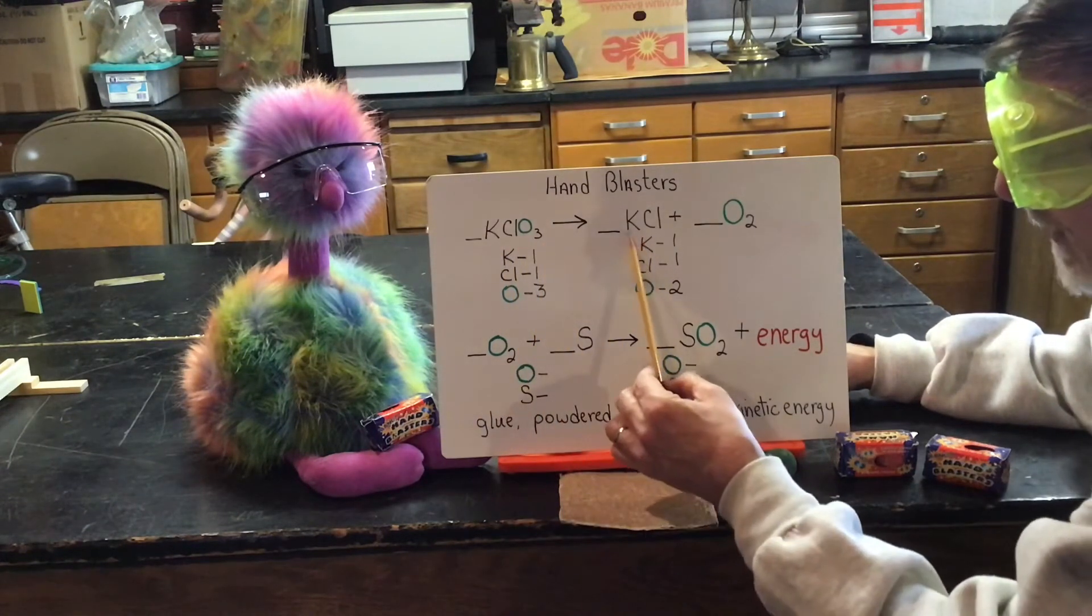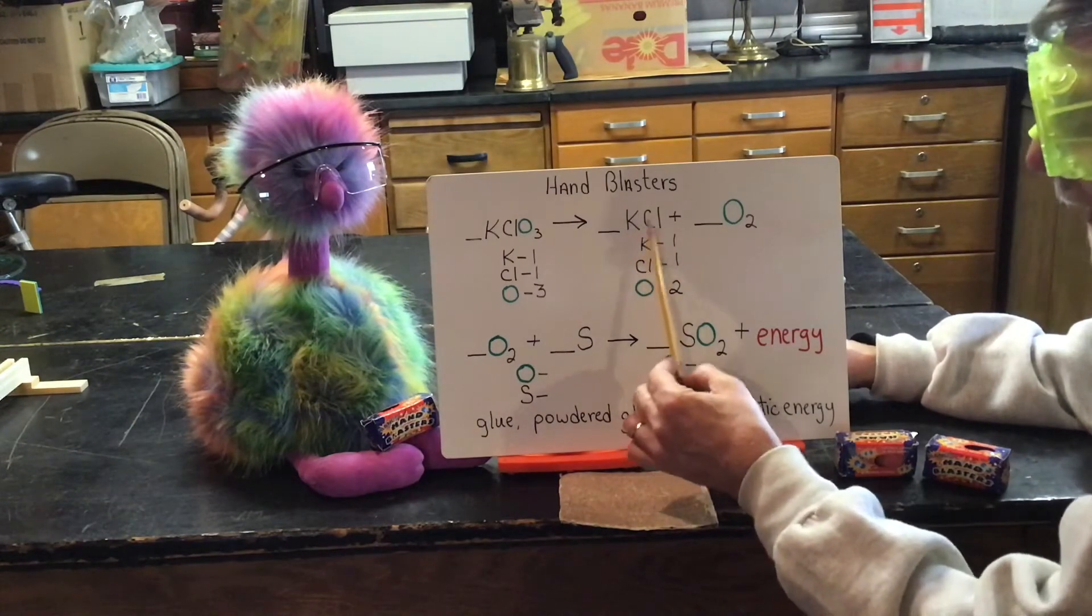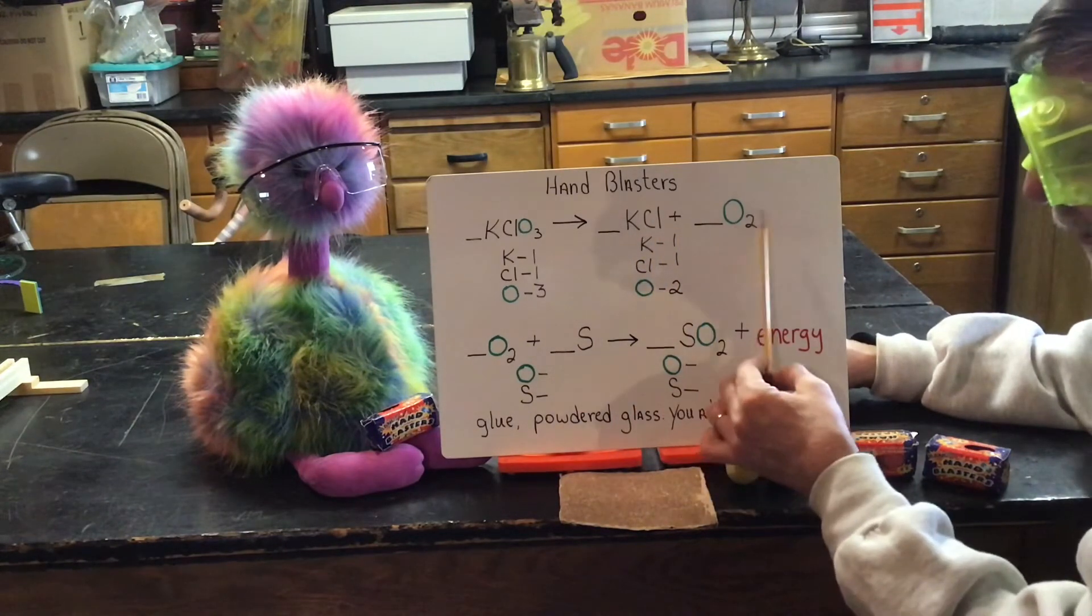Potassium chloride breaks down into potassium chloride, which is salt, and oxygen. This oxygen is given off.